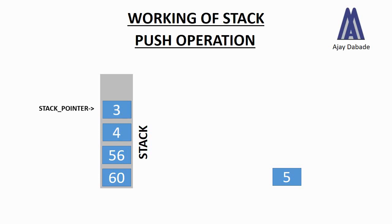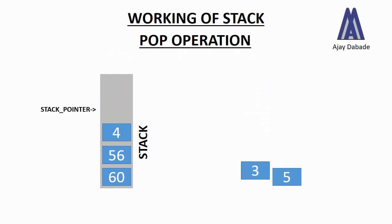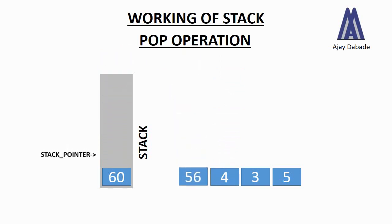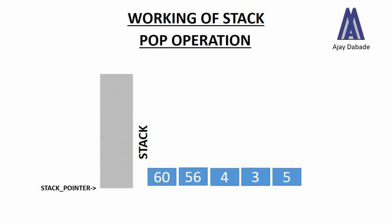Now we will pop all the elements from the stack and see what happens. We perform the first pop: number 3 is at the top, so it gets popped and the stack pointer decrements. Then number 4 is popped, then 56, then 60. After popping the last number, you can see the stack pointer has decremented and is now pointing to nothing — pointing to null. If you try to perform another pop operation, the user will get the message 'stack underflow.' This is how a stack works.